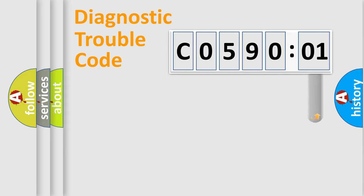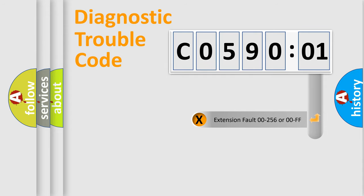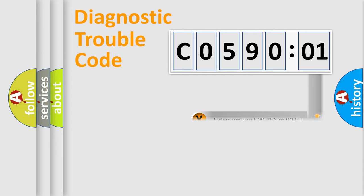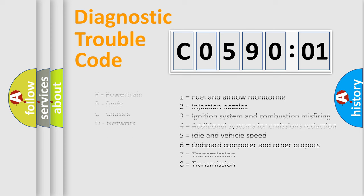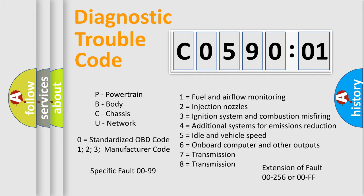The add-on to the error code serves to specify the status in more detail — for example, a short to ground. Let's not forget that such a division is valid only if the second character code is expressed by the number zero.